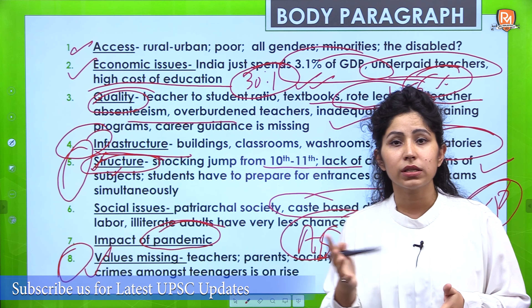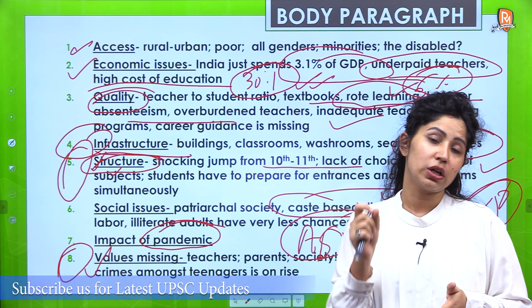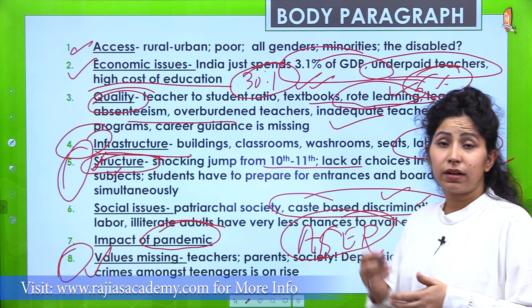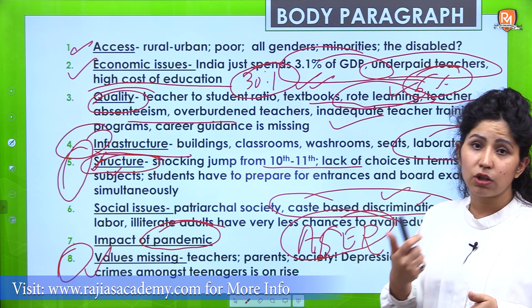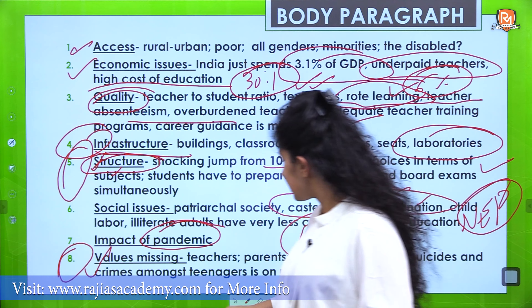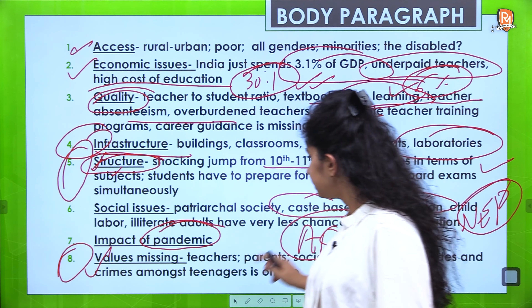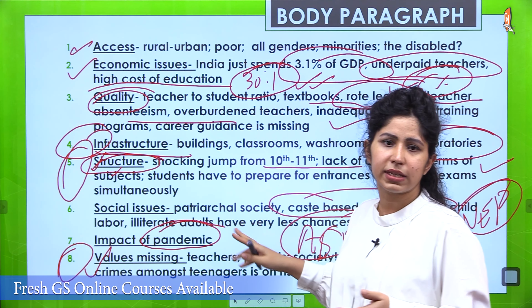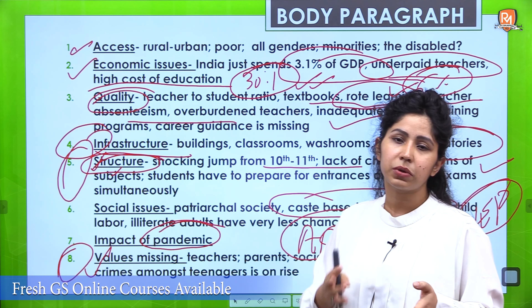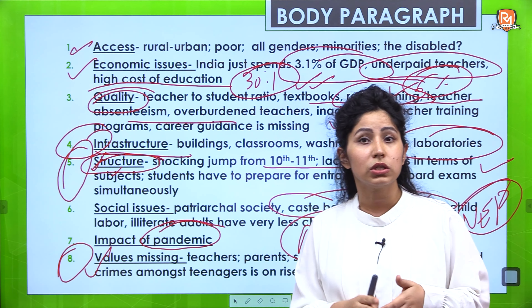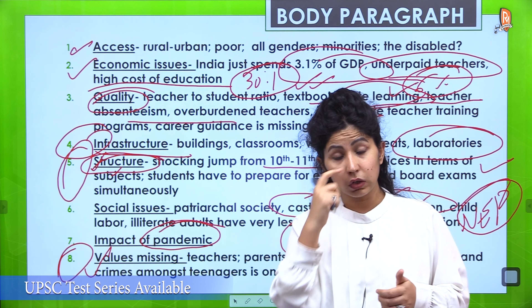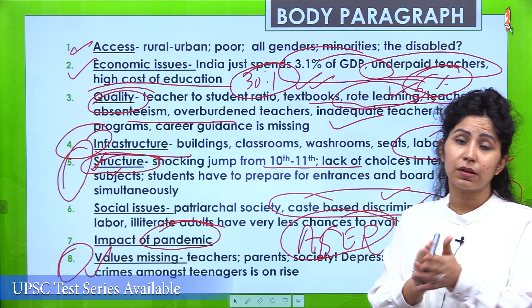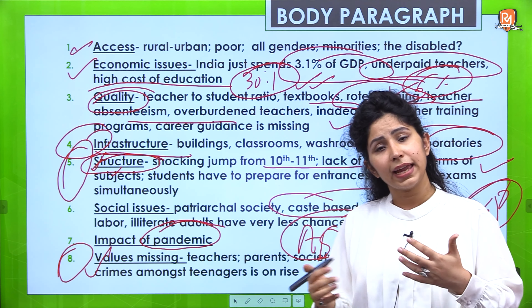The first thing we have to see is understanding the question. The question is very simple — you have to discuss the challenges associated with school education in India in just 250 words. When you have thorough knowledge of the topic, 250 words will feel like a very short word limit.